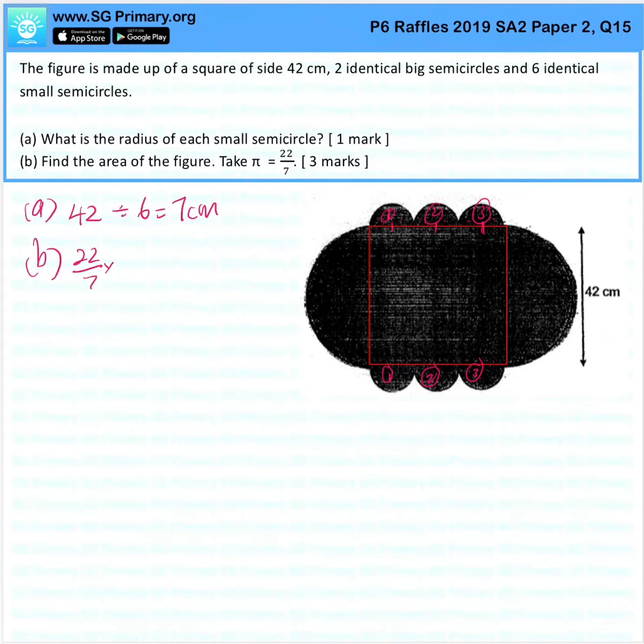22 over 7 times 7 times 7 will give us 154 cm². 3 of these will give us 462 cm². Now the radius of a big circle is 42 divided by 2